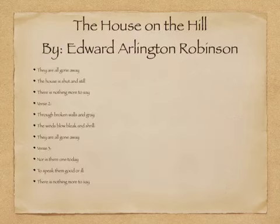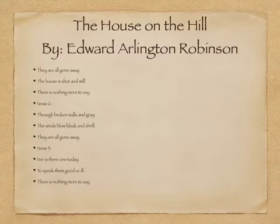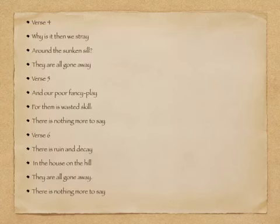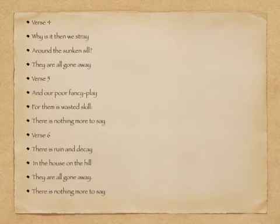Lastly, another example is 'The House on the Hill' by Edward Arlington Robinson. 'They are all gone away, the house is shut and still, there is nothing more to say. Through broken walls and gray, the winds blow bleak and shrill, they are all gone away. Nor is there one today to speak them good or ill, there is nothing more to say. Why is it then we stray around the sunken sill? They are all gone away. In our poor fancy play, for them is wasted skill, there is nothing more to say. There is ruin and decay in the house on the hill. They are all gone away, there is nothing more to say.' Thank you.